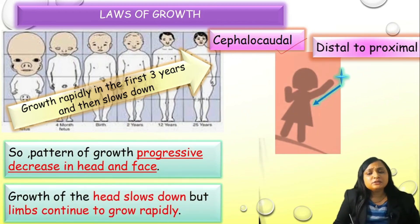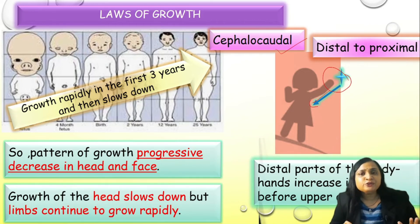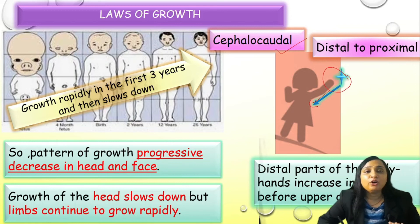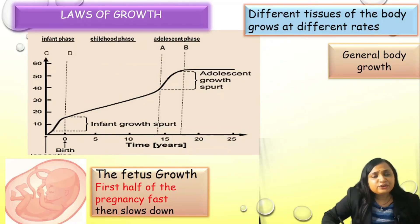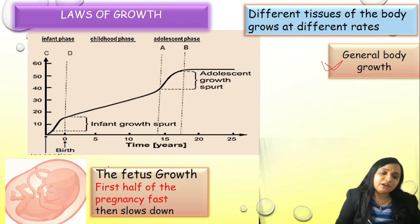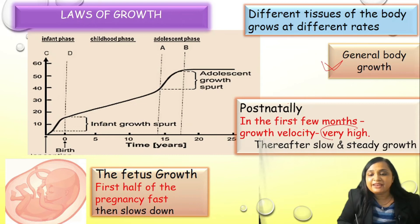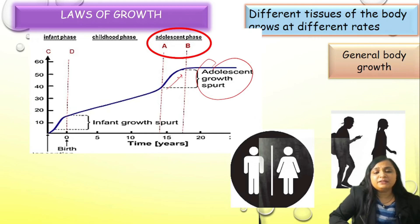In the intrauterine period, 50% of the body is occupied by the head while the legs and trunk are rudimentary. While in adult life, 12% of the total body is occupied by the head and 50% by the legs and trunk. The growth of the brain is rapid in the first 3 years of life, then it slows down and shifts towards the periphery — that pattern is called cephalocaudal. Distal to proximal means the distal part of the body grows first, then the arm. Regarding general body growth, the fetus grows very fast in the first half of pregnancy, then slows down, but in the first few months after birth the growth velocity is very high, then there is a period of slow and steady growth. A second growth spurt comes at adolescent age.